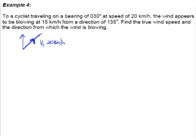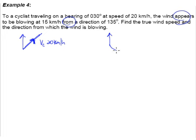The wind appears to be blowing at a speed of 15 km per hour. The keyword is 'appears' and 'from' — from a direction of 135 degrees. Now, 135 bearing is not difficult. So let's figure out where 135 is — it looks a little like this. So this is the bearing of 135 degrees, meaning from this direction means that the wind is blowing towards this direction.